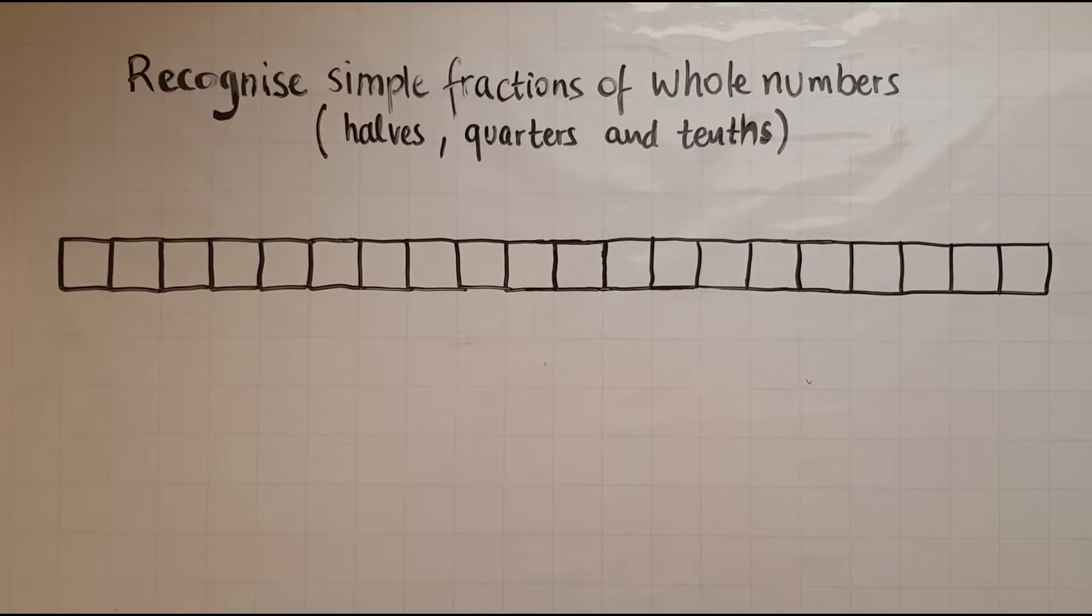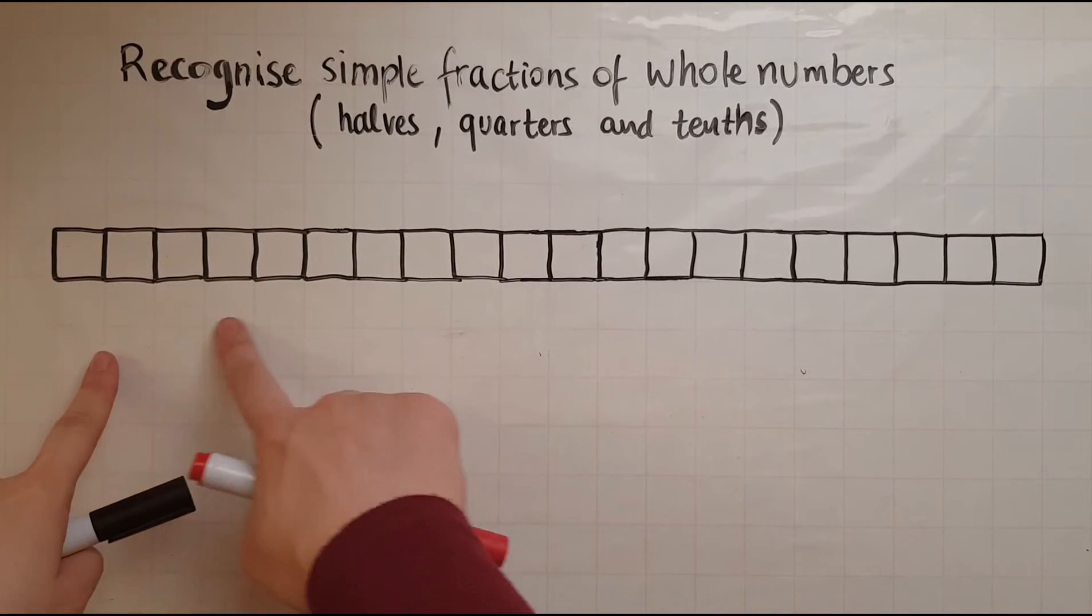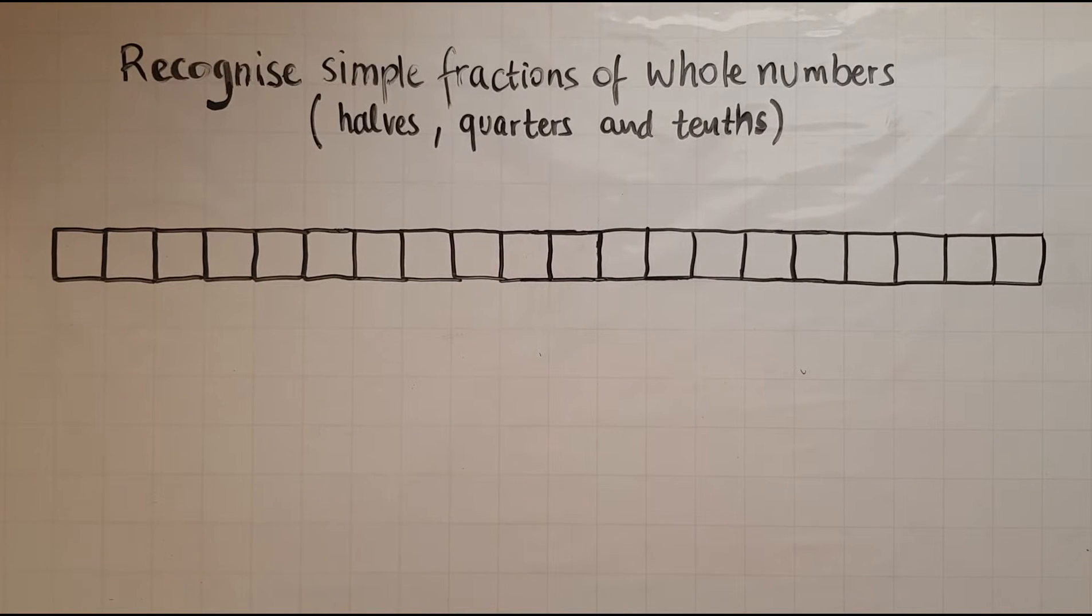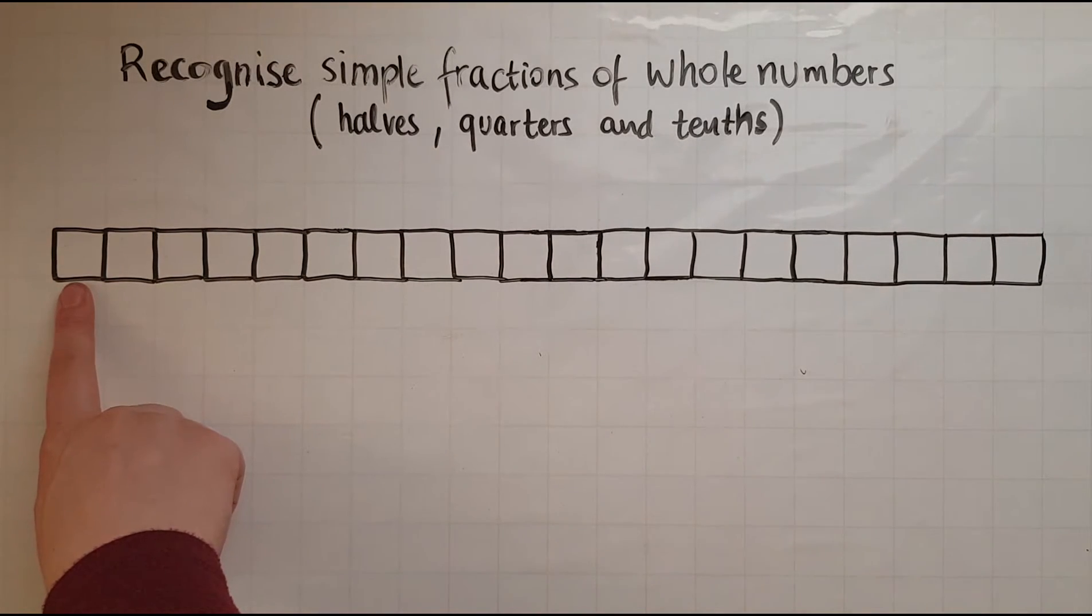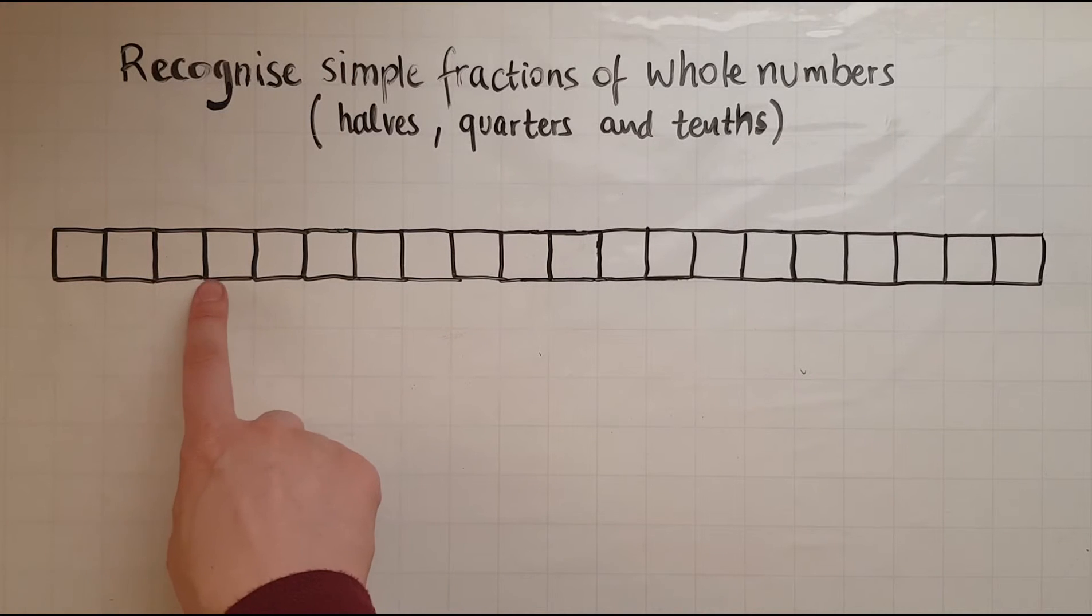We'll now look at tenths of numbers. Tenths of whole numbers. So again, I've got 20 squares lined up and I want to find a tenth of this. A tenth of 20. So that means cutting the shape into 10 equal parts or cutting the number into 10 equal parts or sharing the number into 10 equal parts. So if that was representing 1, this square, that would be 2, 3, 4, 5, 6, 7, 8, 9, 10, 11, 12, 13, 14, 15, 16, 17, 18, 19, 20.